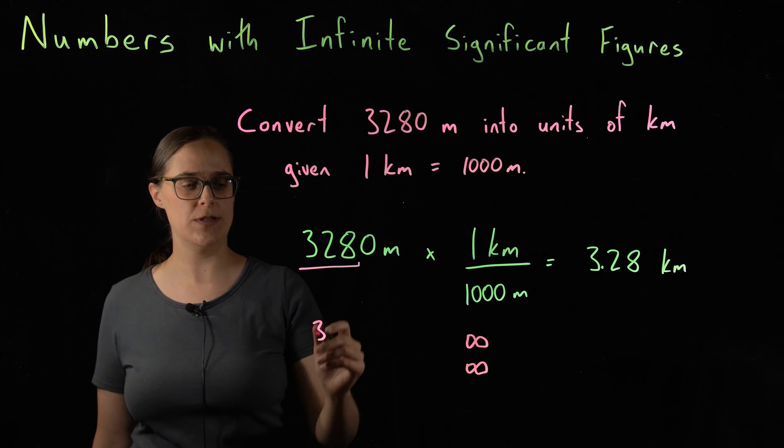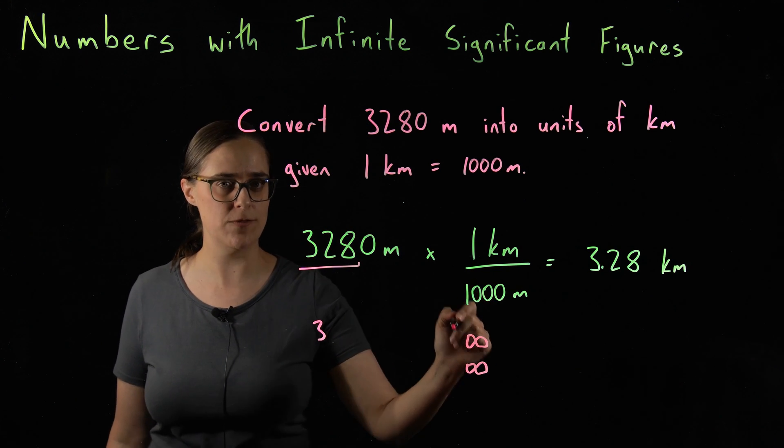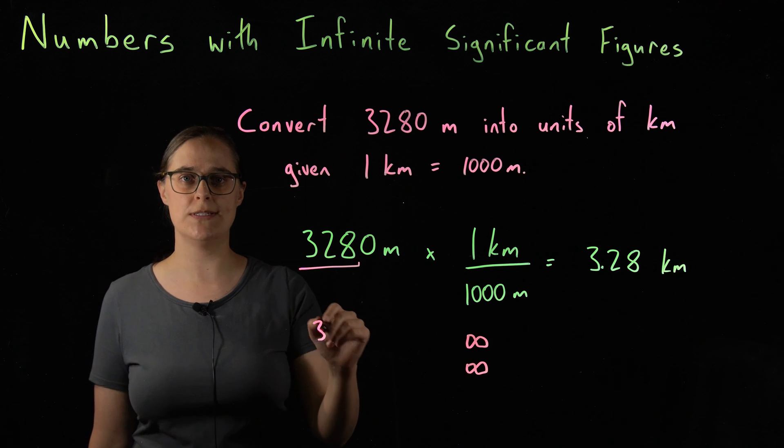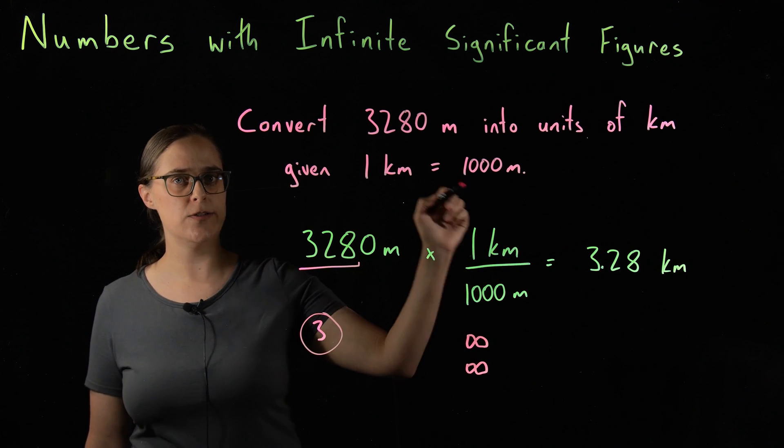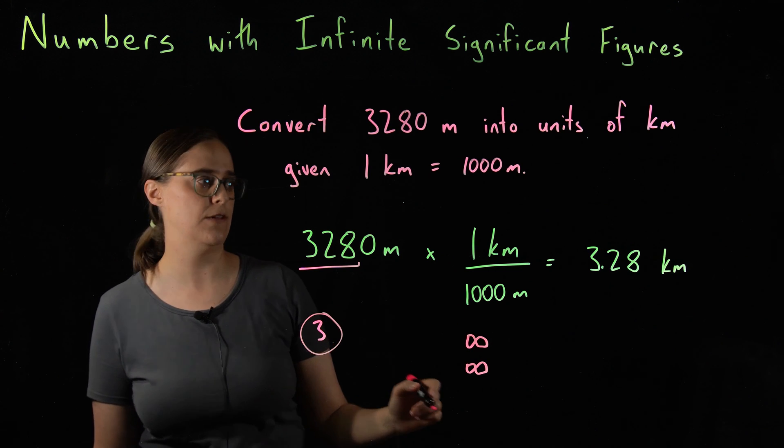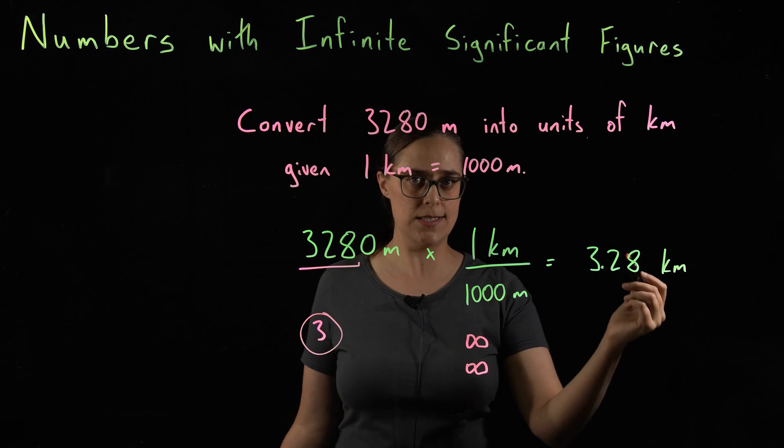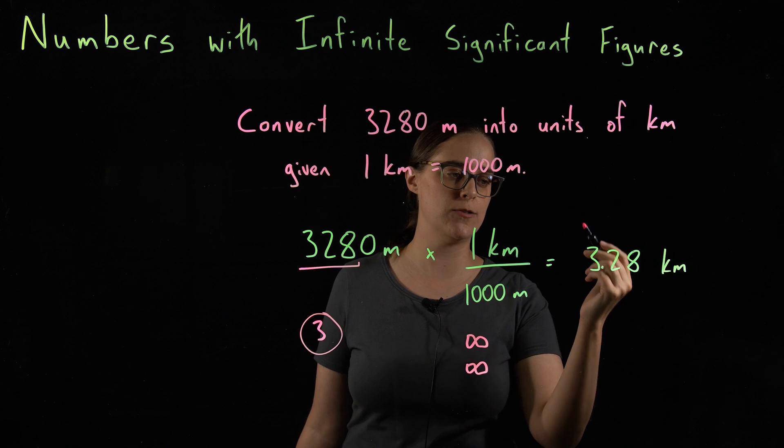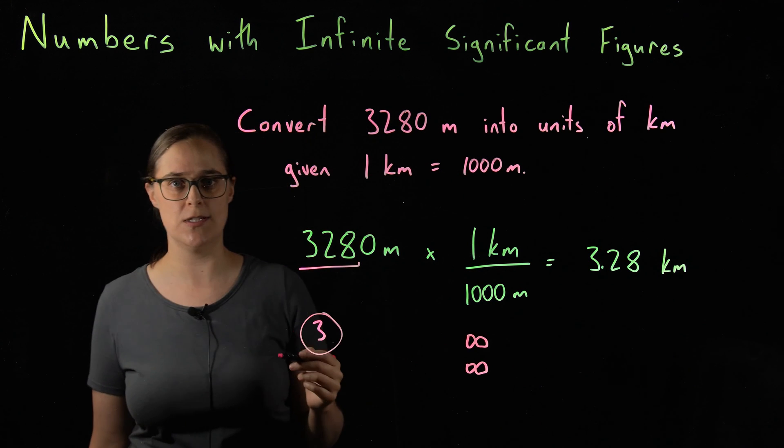So the three digits we are comparing, three, infinite, infinite. The lowest of these numbers is the three. The answer needs to be rounded to three significant figures. In this case, it already has three significant figures. So 3.28 kilometers is the correct answer.